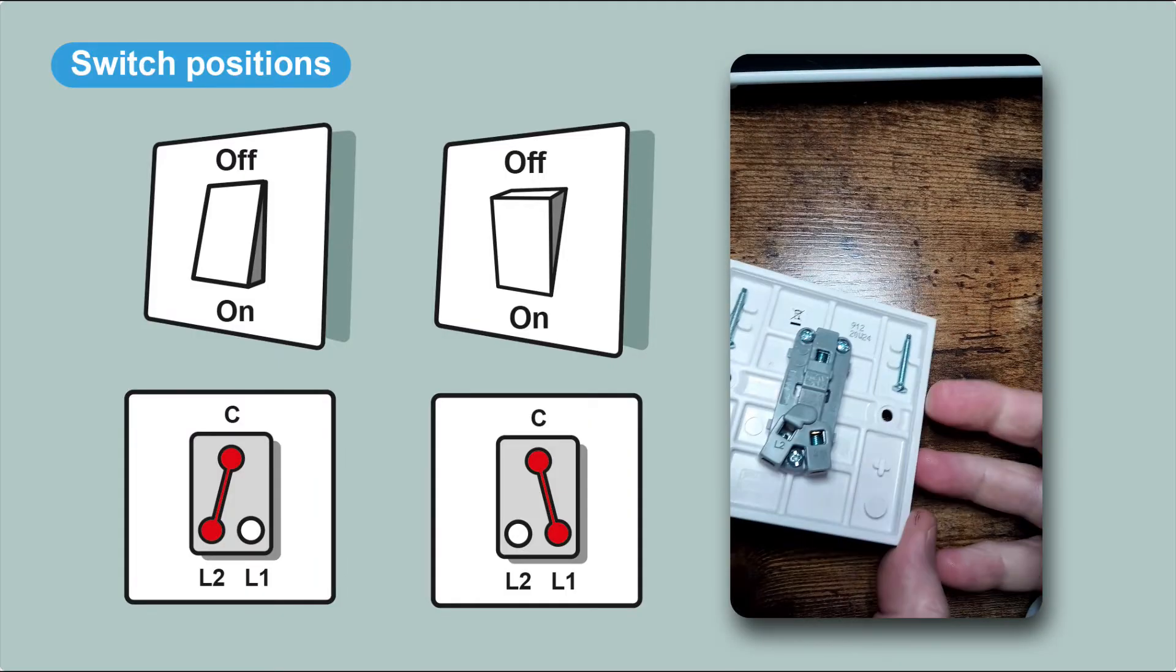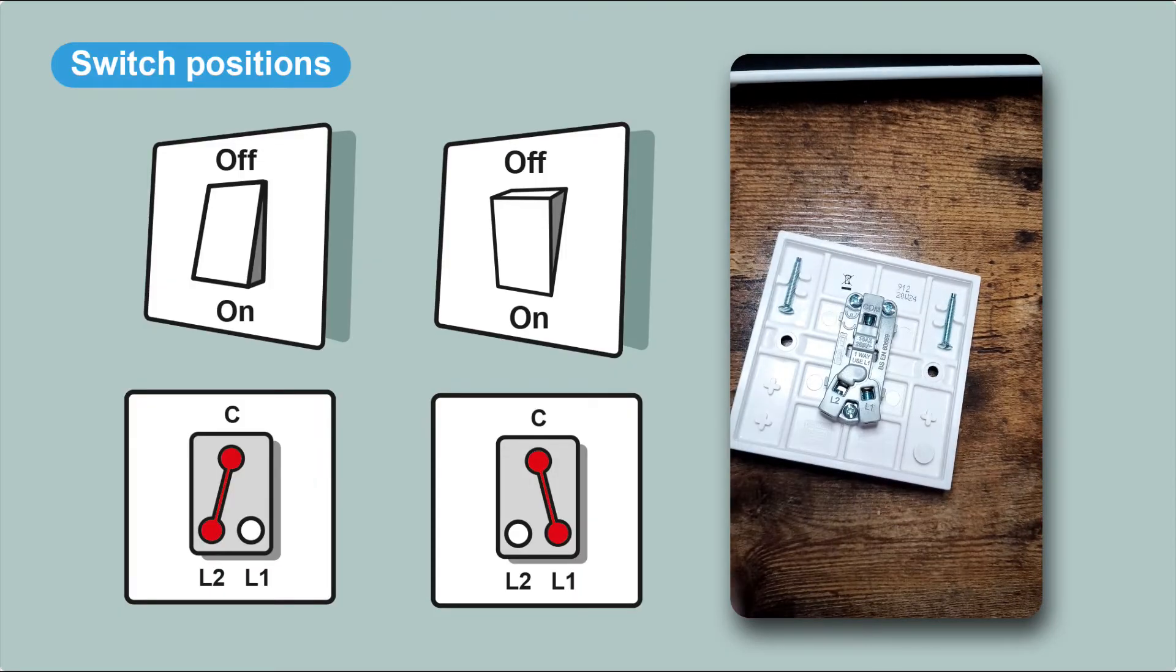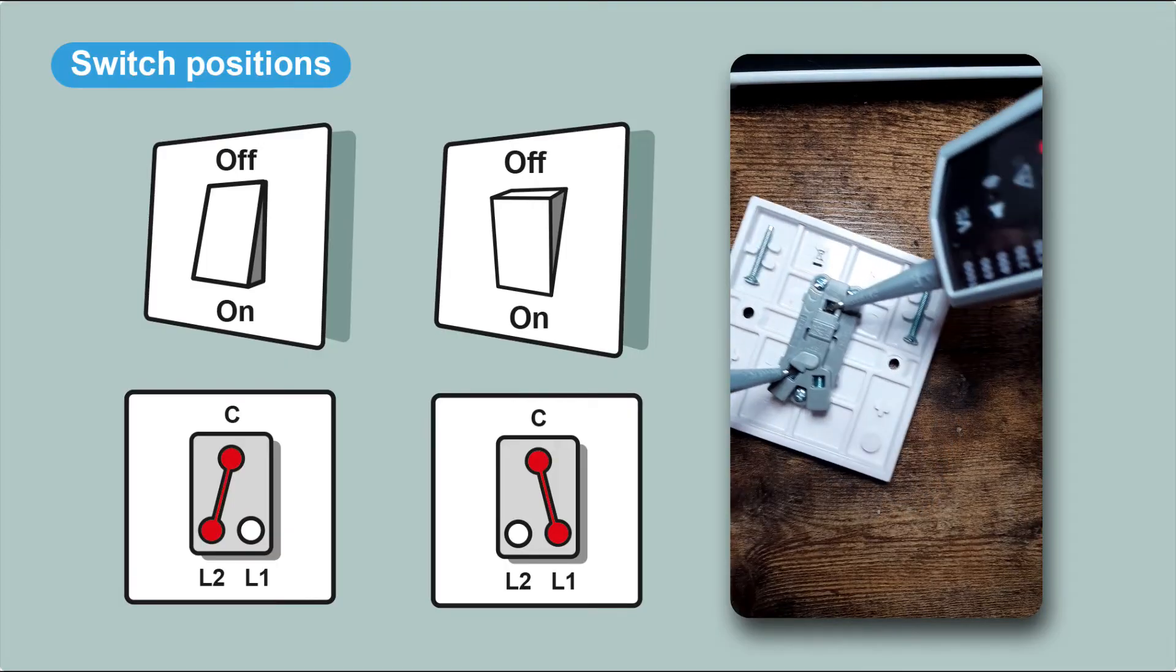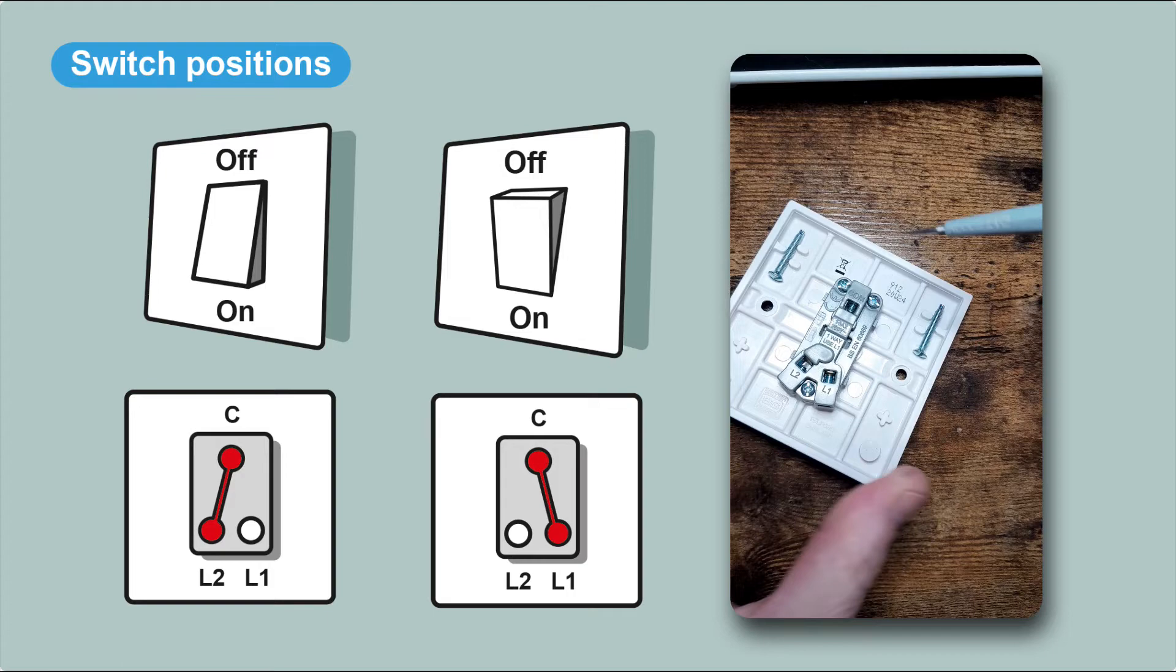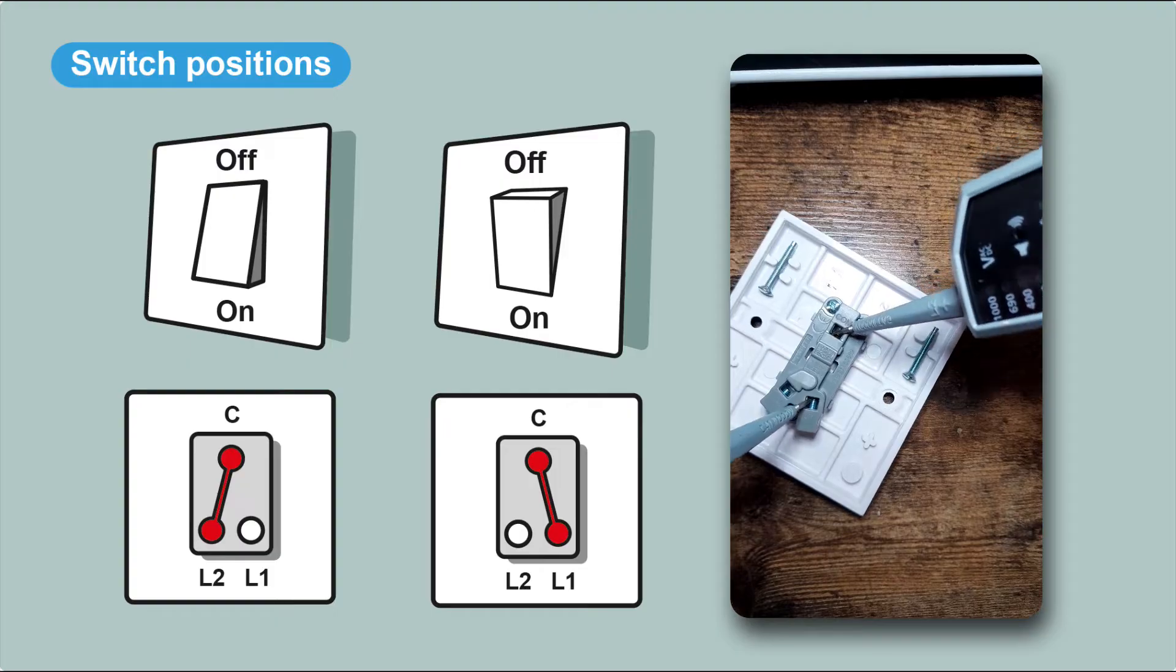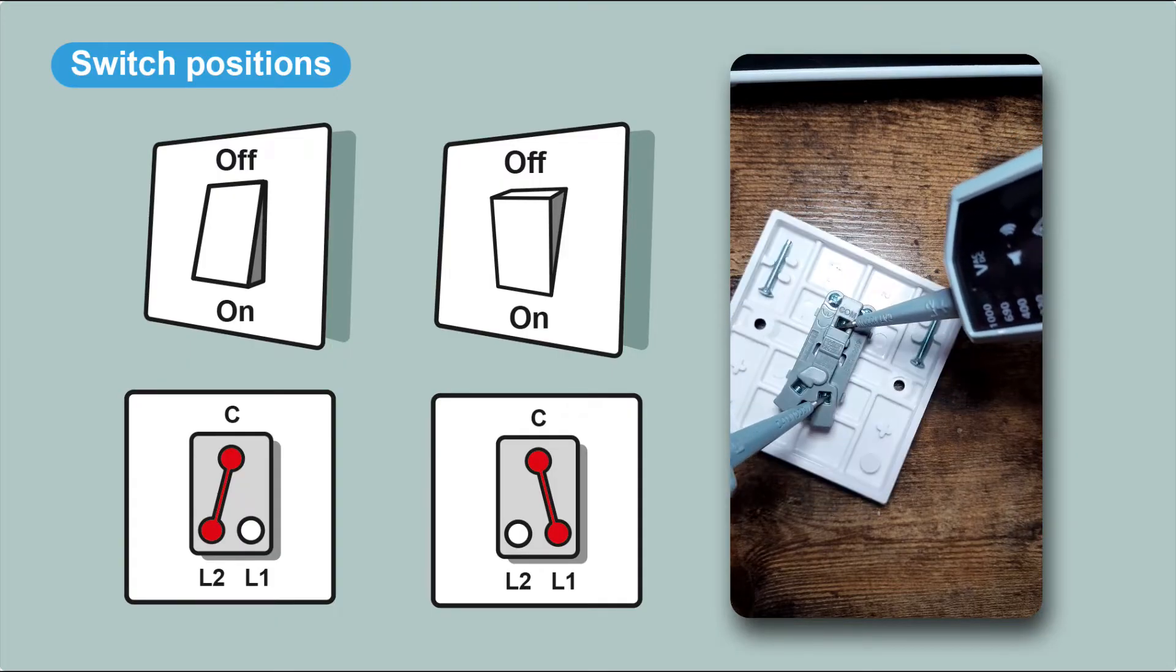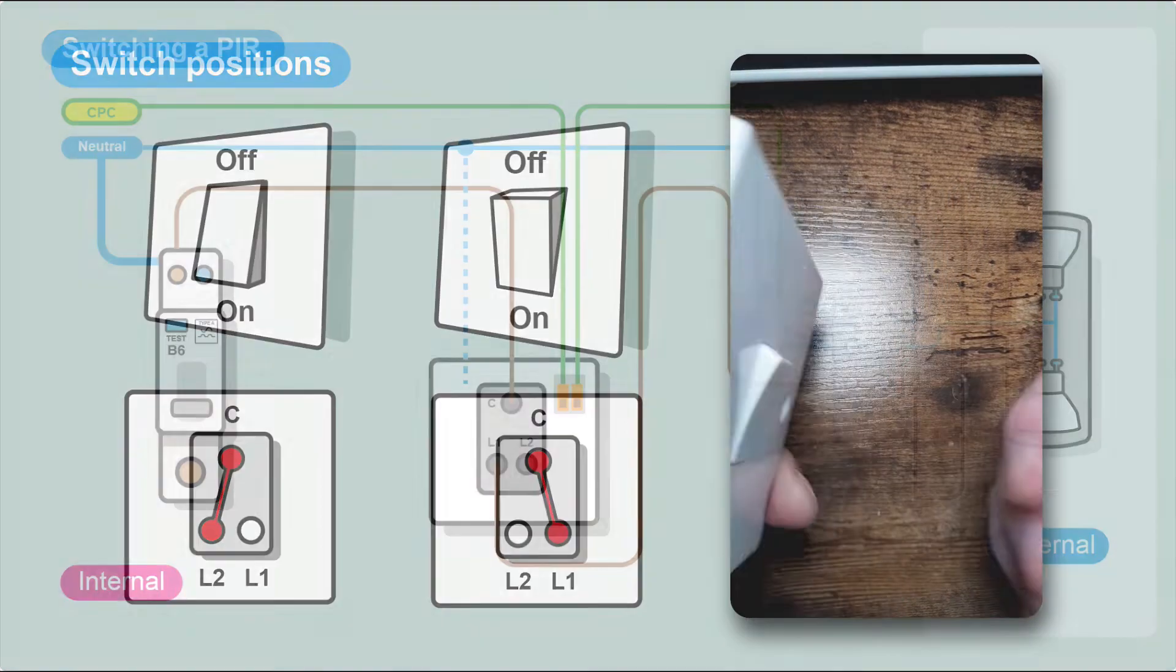Here's a little video. Make sure your switch is at the top, the right way around. In the switch in the off position, test between common and L2 - you'll get a beep. Switch it on, test between common and L1, you'll get a beep again. No beep between common and L2. Off is common L2, on is common L1.